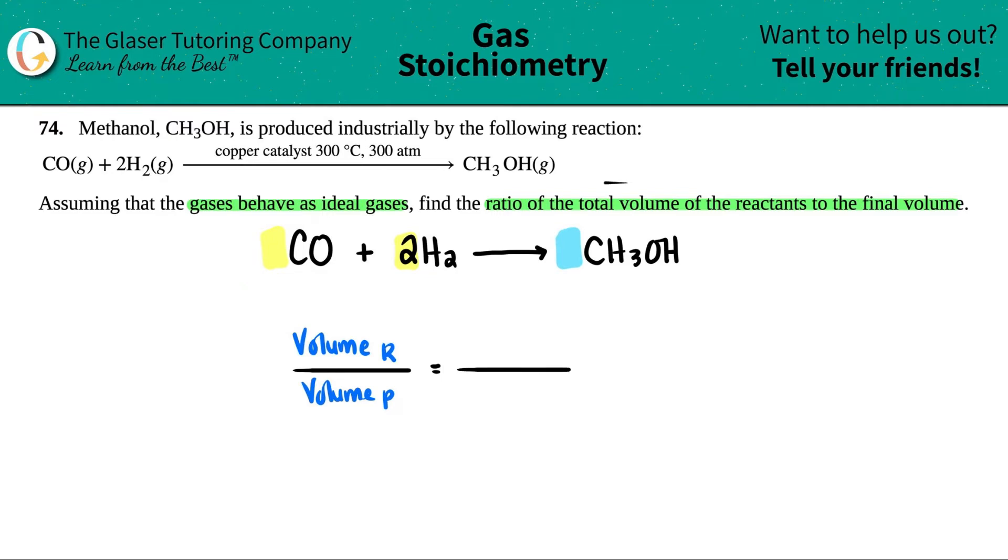Okay. Well, let's see. What is the total volume of the reactants? Well, just treat it as a mole ratio, right? There was no number in front of the CO, so that's a 1. And then we had two H2s. So how many total moles do we have on my reactant side? Yeah, 1 plus 2 is a total of 3. So I can use this 3 as a mole, and I can use it also as a volume. So the 3 goes on the top.